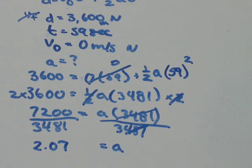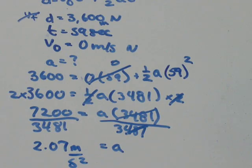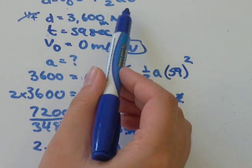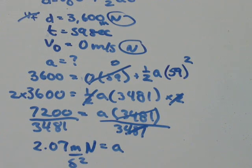And then just think about your units. Acceleration is meters per second squared, and the direction we're traveling throughout the question has been north. So we would say that acceleration is equal to 2.07 meters per second squared in the north direction.